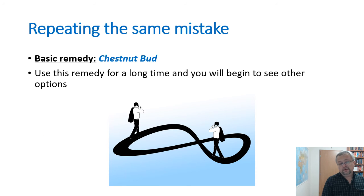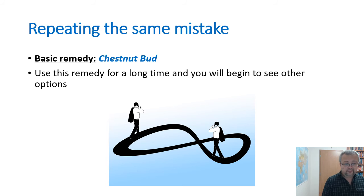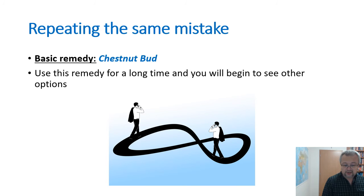For repeating the same mistake — for example, getting into the same communication problem or conflict repeatedly without knowing why — the basic remedy is Chestnut Bud, and it should be taken for a long time, a few months. We can also add any other remedy that helps to change the situation and learn from it.